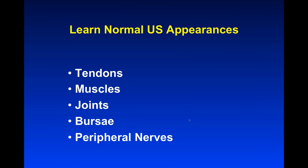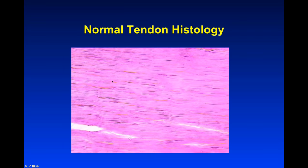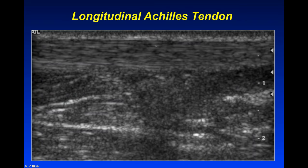One benefit of MSK ultrasound is that each type of tissue has its own signature appearance. Starting with tendons: normal tendons have nice parallel collagen fibers, very monotonous. When the ultrasound beam hits these fibers, it produces echoes. Looking at this longitudinal Achilles tendon, we see alternating hyper- and hypoechoic lines — bright and dark lines going across the tendon. That is the signature of tendons no matter where we are in the body.